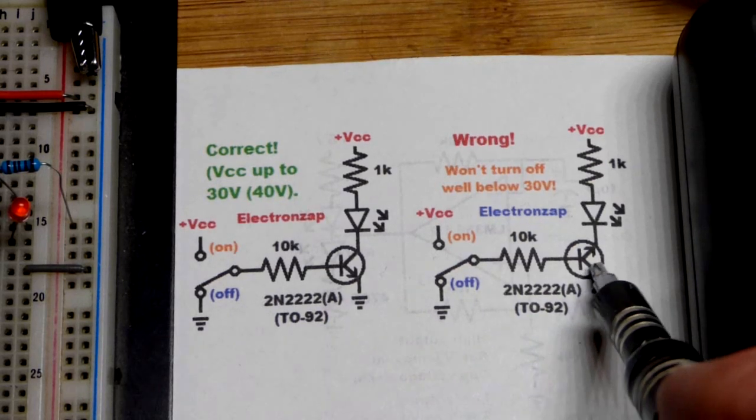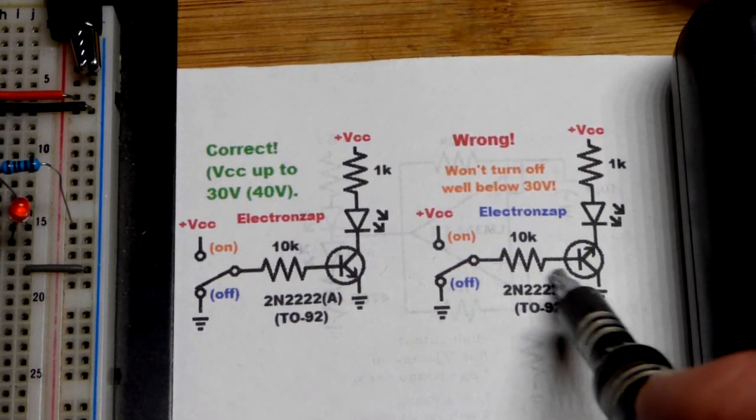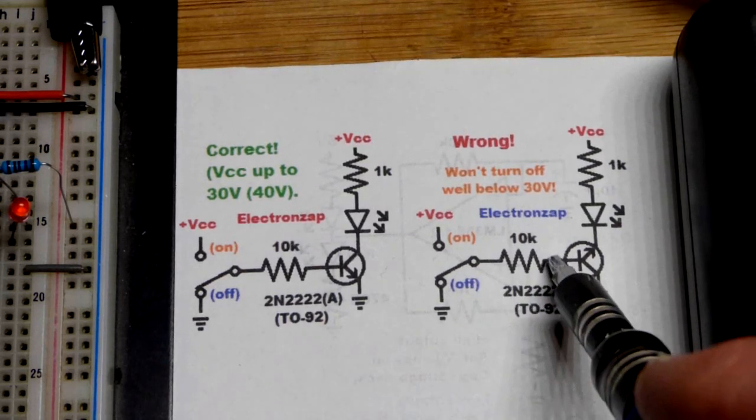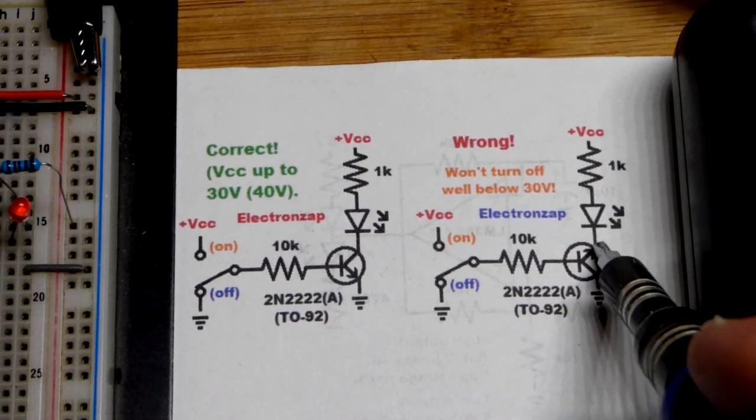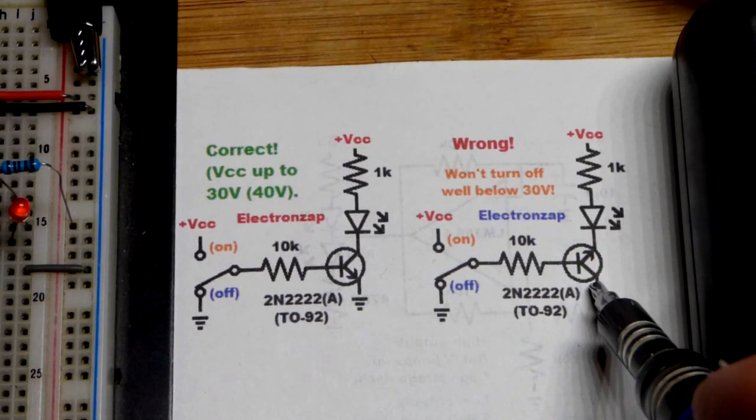And here you can see if we put the transistor in backwards, so the middle pin is the base. It's easy to know if you have the right pin to the base or not. But sometimes you confuse collector and emitter. That can happen.